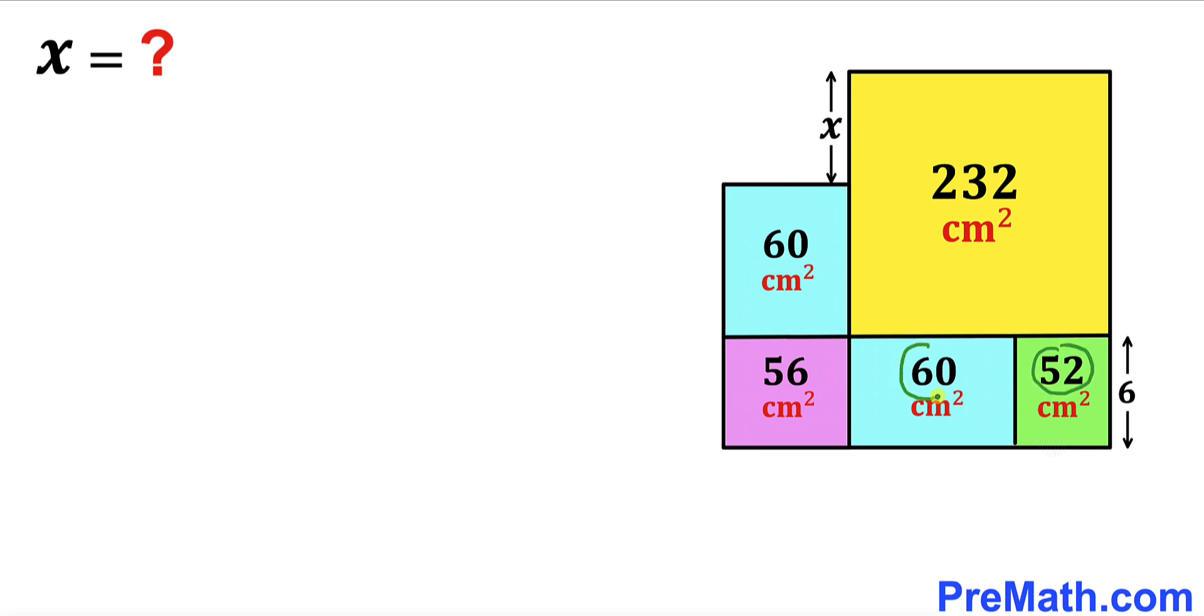The area of this blue is 60 centimeter square. Likewise this blue is 60 centimeter square as well. The area of this purple rectangle is 56 centimeter square and finally the area of this yellow rectangle is 232 centimeter square.